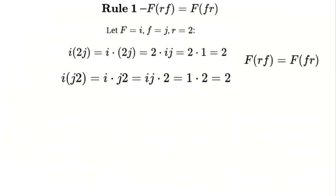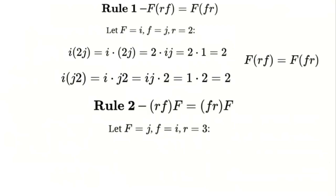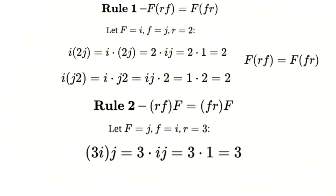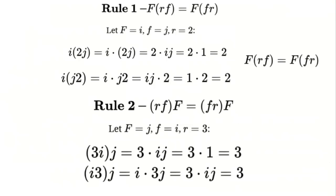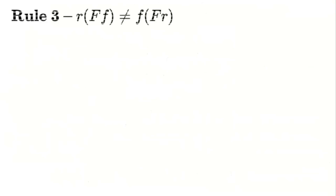The second rule is similar: r × F × small_f = small_f × F × r. This rule applies when the capital F is at the end — the scalar r and the small f still commute freely before hitting the capital F. For example, let F = j, small f = i, and r = 3. Calculate r × F × small_f: 3 × j × i = 3 × (−1) = −3 since j·i = −1. Calculate small_f × F × r: i × j × 3 = 1 × 3 = 3 since i·j = 1. So r × F × small_f = small_f × F × r.